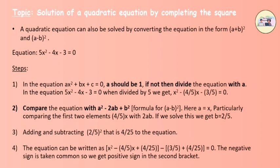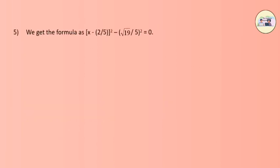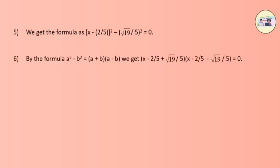Step 4: The equation can be written as x squared minus 4 by 5 x plus 4 by 25 minus 3 by 5 minus 4 by 25 equals to 0. The negative sign is taken common, giving a plus sign in the second bracket. We get (x minus 2 by 5) squared minus (root 19 by 5) squared equals to 0. By the formula a squared minus b squared equals to (a + b)(a minus b), we get (x minus 2 by 5 plus root 19 by 5)(x minus 2 by 5 minus root 19 by 5) equals to 0.